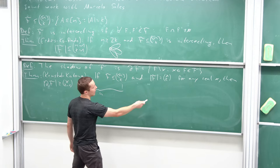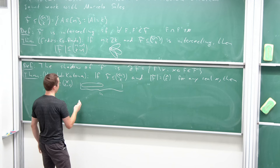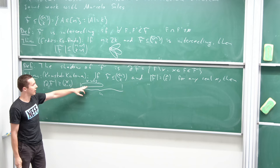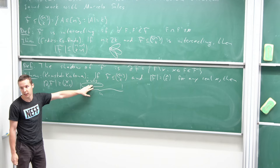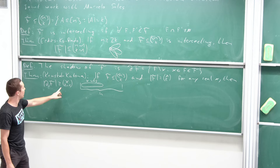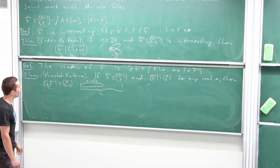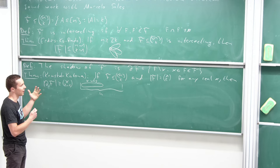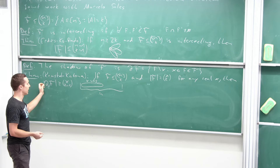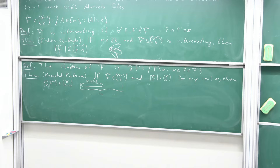What this tells us is that if we think of x as an integer and fix the size of our family, we can minimize the shadow by gathering everything in a set of size x. So we take x vertices and all k-subsets of that set, and the shadow has exactly size x choose k minus 1. There are many results on intersecting families and their generalizations, and also many results on the shadow.